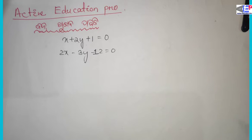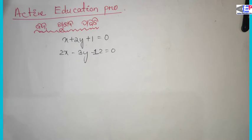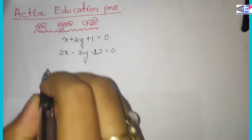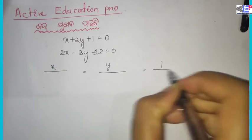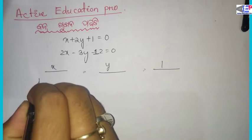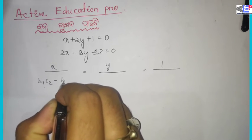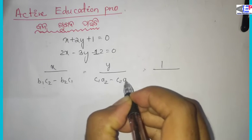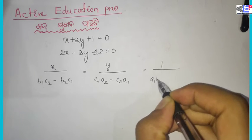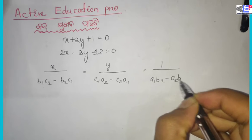I will skip directly to connecting the formula to the answer. The formula is: x by y by 1 is equal to — using the cross-multiplication method — b1·c2 minus b2·c1, then c1·a2 minus c2·a1, then a1·b2 minus a2·b1.